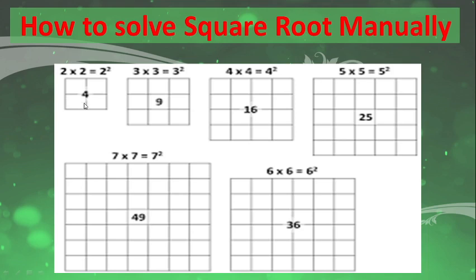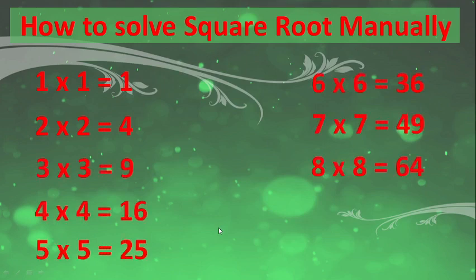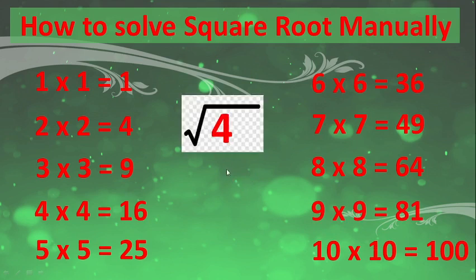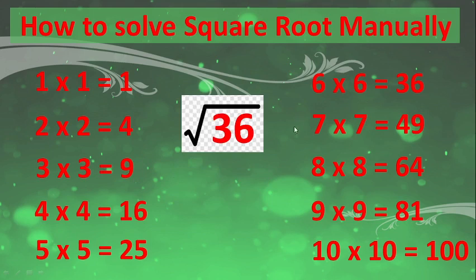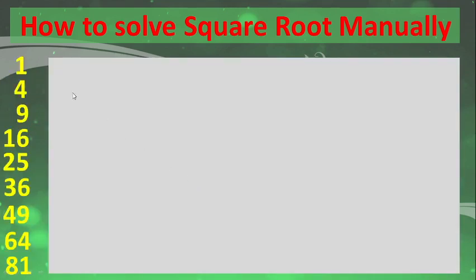We need the perfect squares: 1, 4, 9, 16, 25, 36, 49, 64, and 81. These come from 1×1, 2×2, 3×3, and so on up to 9×9. We need this single-digit multiplication table because the square root of 4 is 2 (since 2×2=4), the square root of 9 is 3, the square root of 36 is 6, the square root of 64 is 8, and the square root of 81 is 9. We only need digits 1 through 9 since 10 is a two-digit number.